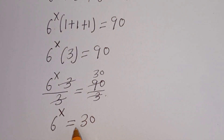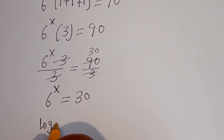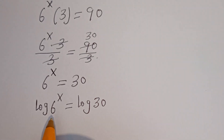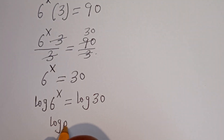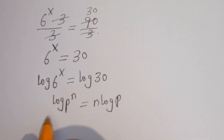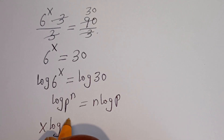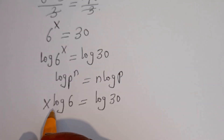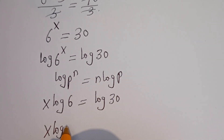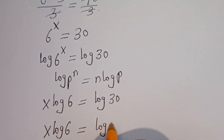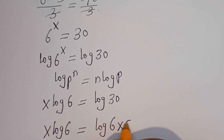Let's take the log of both sides: log of 6 to the power of x is equal to log 30. Using the rule log P to the power of n equals n log P, this becomes x·log 6 equals log 30, which can be written as log(6 × 5).